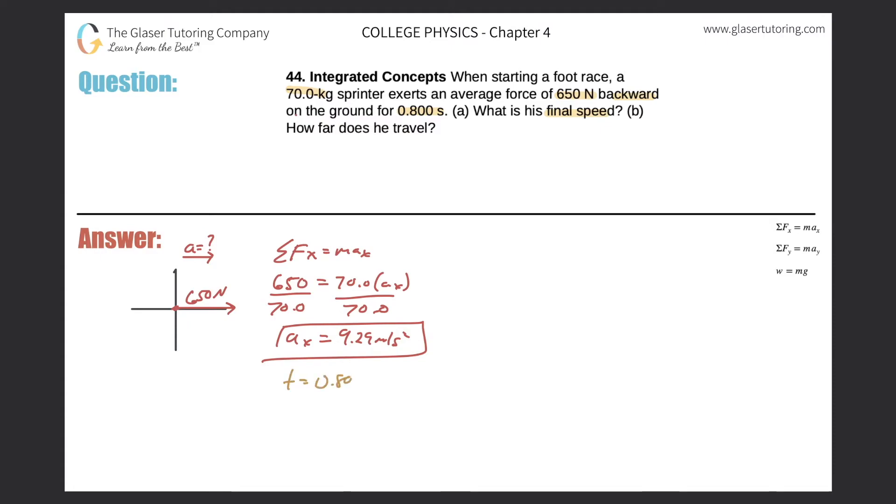That was 0.800 seconds. We do know that this sprinter started a race, so the initial velocity we have to assume is zero. And what else? We're looking for the final speed.